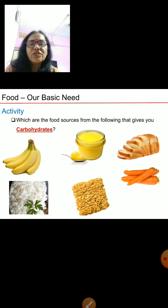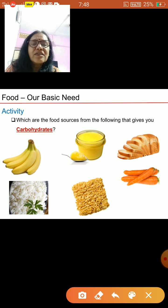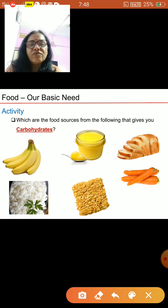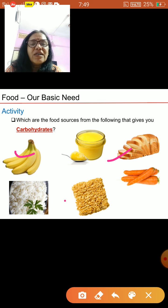Now we will do a small activity. You have to identify which of the food sources gives you carbohydrates. The pictures shown are banana, ghee, bread, carrot, noodles and rice. Banana gives you carbohydrates. Ghee doesn't give carbohydrates. Bread gives you carbohydrates. Noodles also give you carbohydrates. Rice also gives you carbohydrates. So these are the four food items that give you carbohydrates.